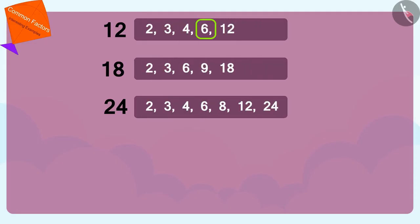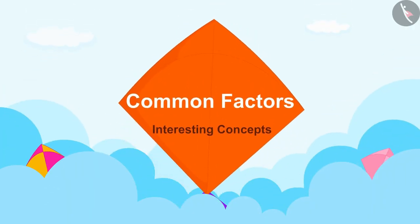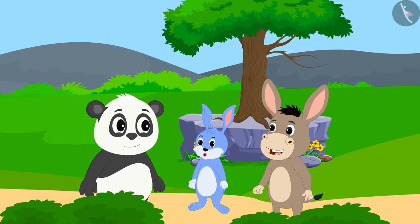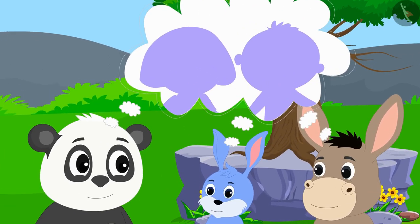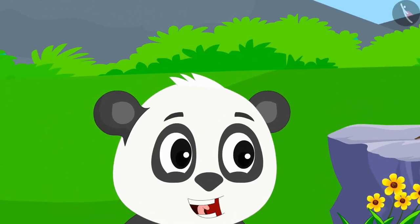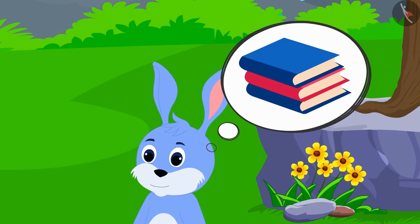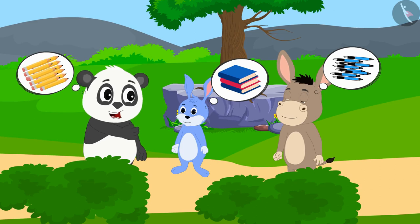Hello kids! In the previous video we learned more about common factors. In this video we will see some interesting concepts related to this. Golu, Bola, and Bunny together have decided to donate some items to the needy children of Champapur. Golu will bring pencils, Bola will bring pens, and Bunny will bring notebooks. Then all three of them will divide those things equally among the children so that every child gets every item.